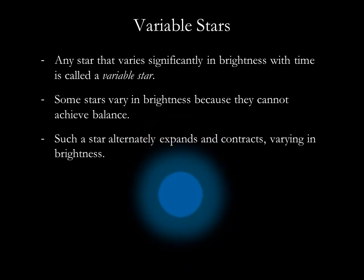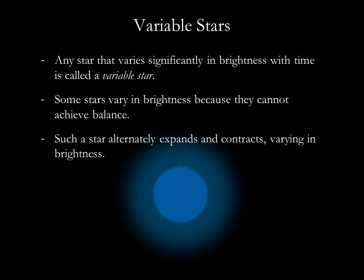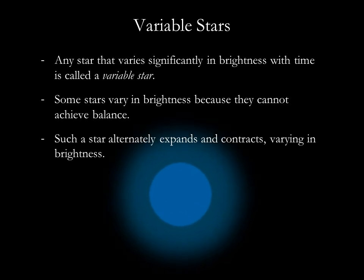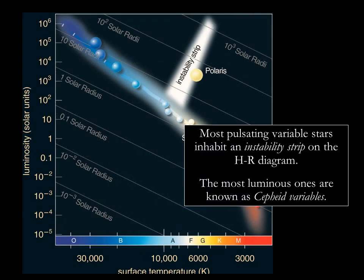Not all stars shine steadily like our sun. Any star that varies significantly in brightness with time is called a variable star. Certain types of variable stars cannot achieve balance between the power coming out of their core and the power radiated out to the surface. These stars expand and contract as they try to find a balance. Most of these pulsating variable stars inhabit an area called the instability strip on the HR diagram.